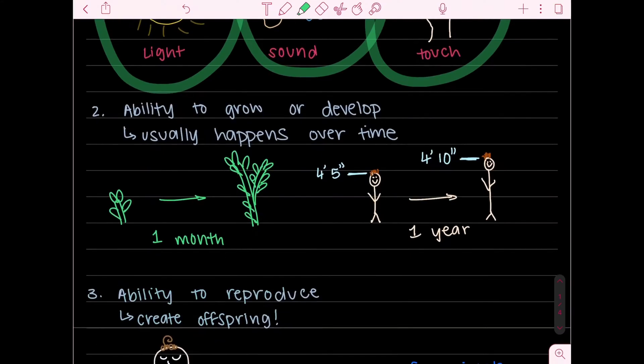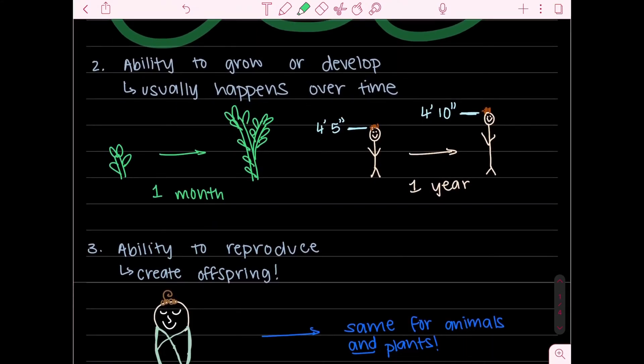So the second characteristic is the ability to grow or develop. And growth usually happens over a period of time. It doesn't happen instantaneously or overnight. So let's talk about plants. Plants can grow and develop faster, usually faster than human beings. So for example this tiny plant can grow into this big one over the period of one month.